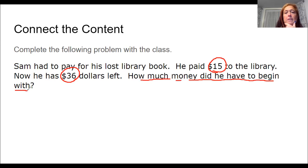So our unknown equation, because our unknown is how much money he had to begin with, is our box. And we're subtracting from that amount $15, because that's how much he had to pay to the library. And then we know that he had $36 once he was done paying for his library book. So we need to figure out how much money he started with.